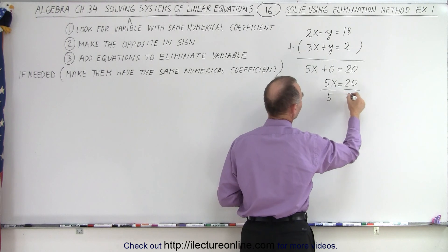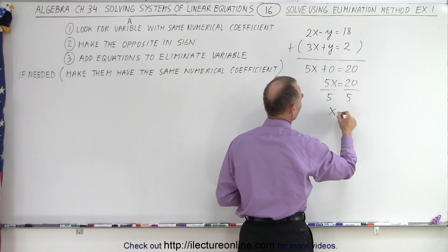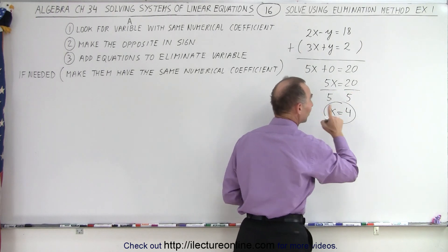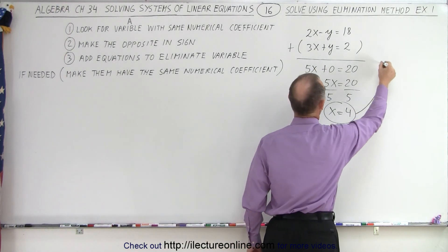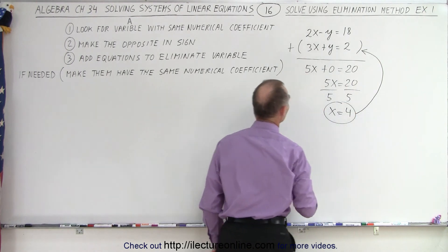Then we divide both sides by 5, and we get x equals 4. Now once we've determined one of the variables, to get the other variable, we need to plug that into one of the two equations, and I'm going to plug it into that equation.